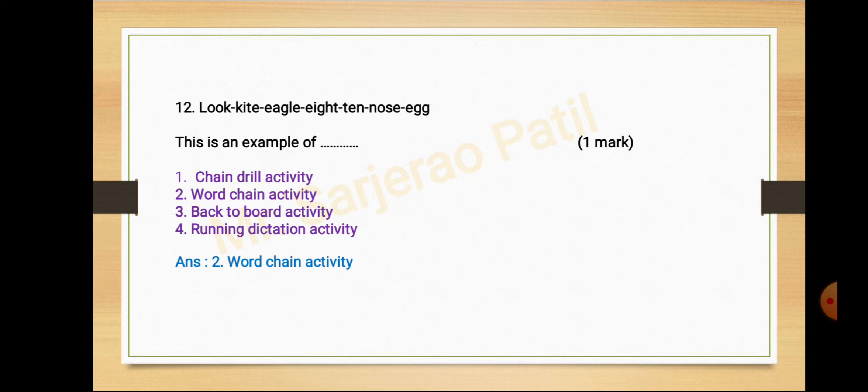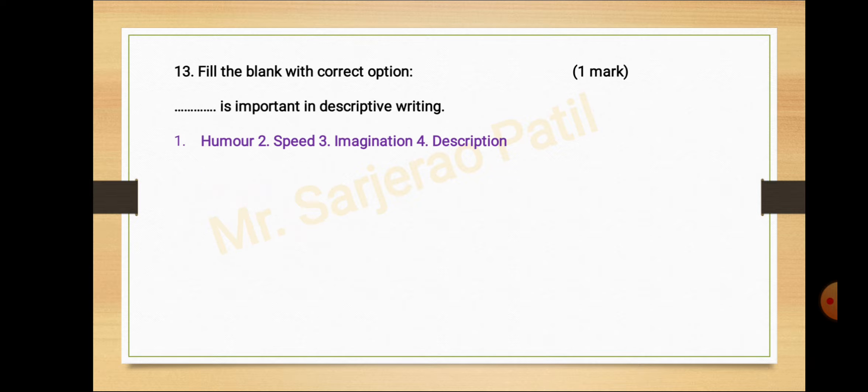Activity number thirteen, fill the blank with the correct option. Dash dash is important in descriptive writing. Option number one humor, second speed, third imagination, fourth description. Answer is option number three, imagination.